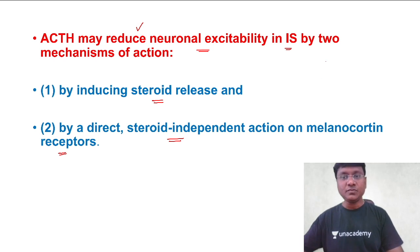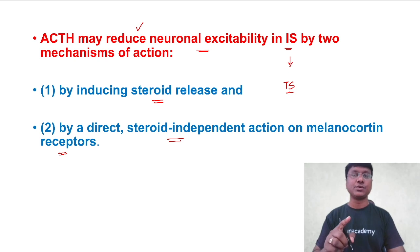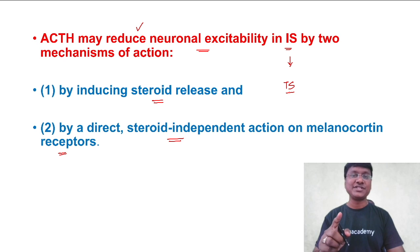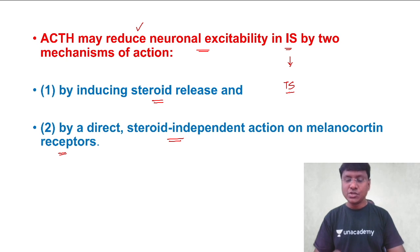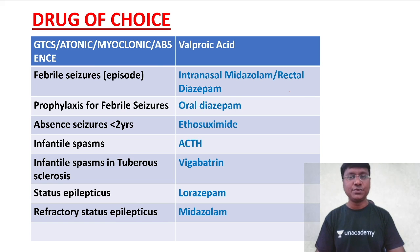In infantile spasms present in patients with tuberous sclerosis, the drug of choice will be vigabatrin. Drug of choice in epilepsy is a very important topic, so let me give you a quick recap of drug of choice in various types of epilepsy.